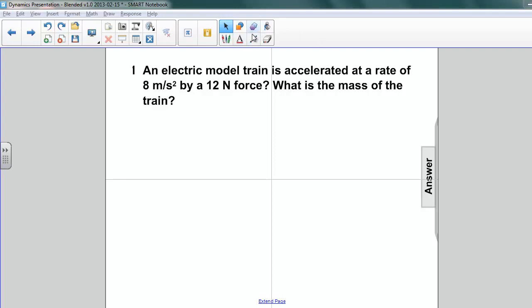So, let's have a look. The information we're given is the acceleration, 8 meters per second squared, and the force. And this time, we're asked to find the mass of the object. So, let's do this.